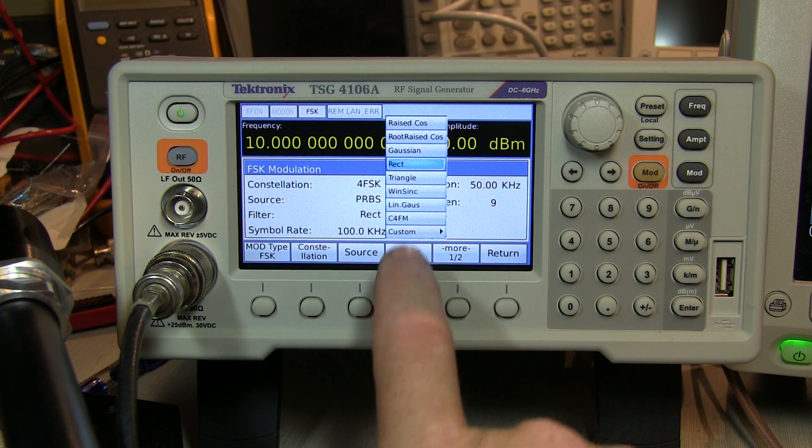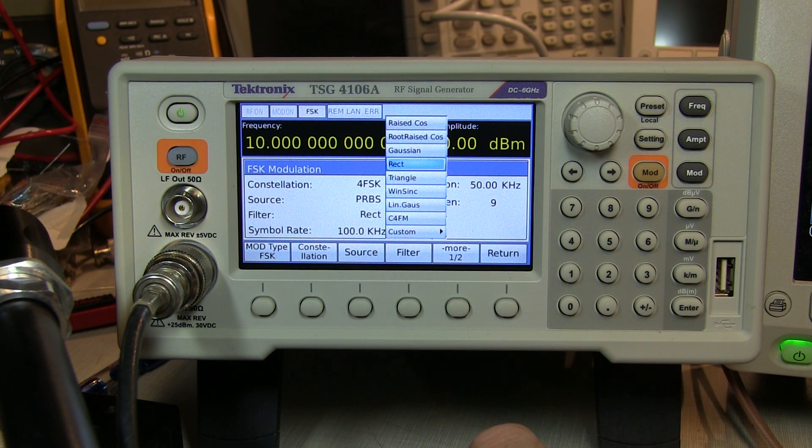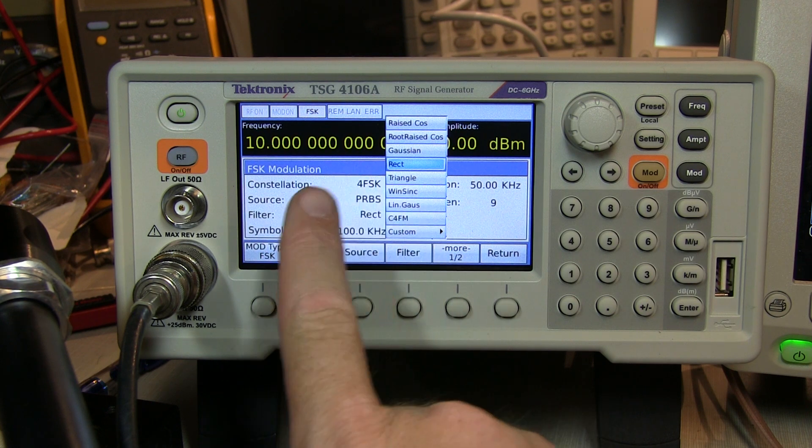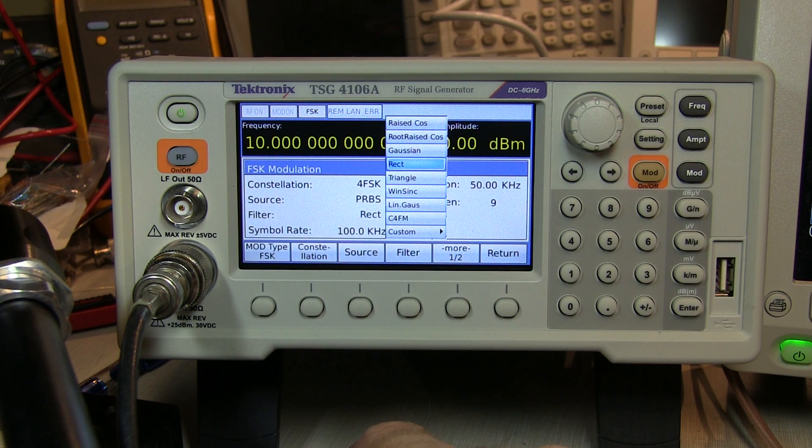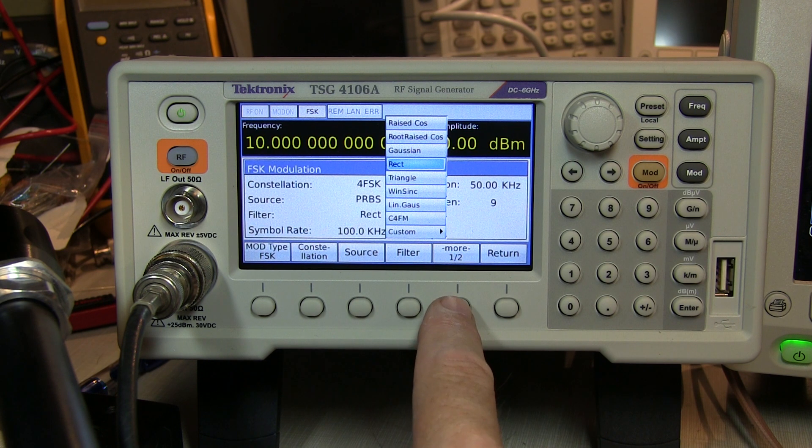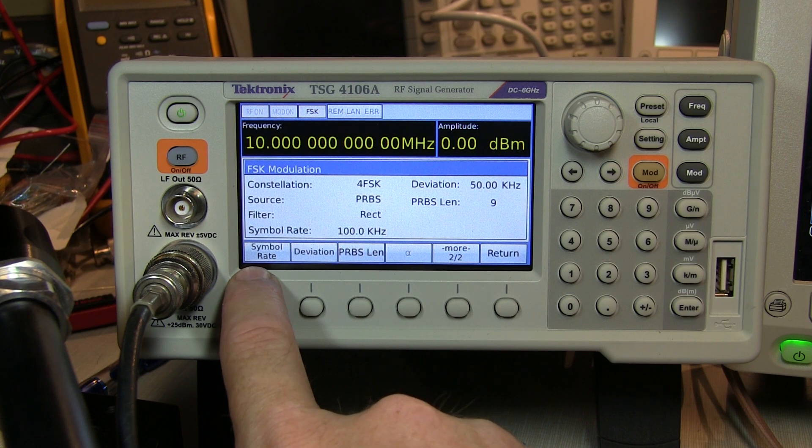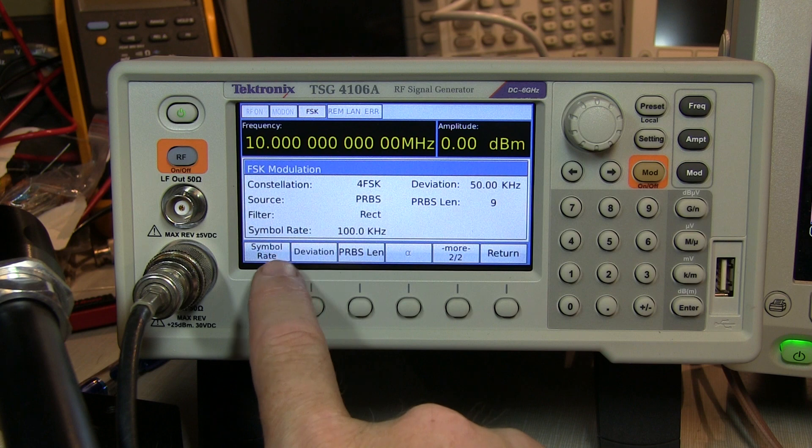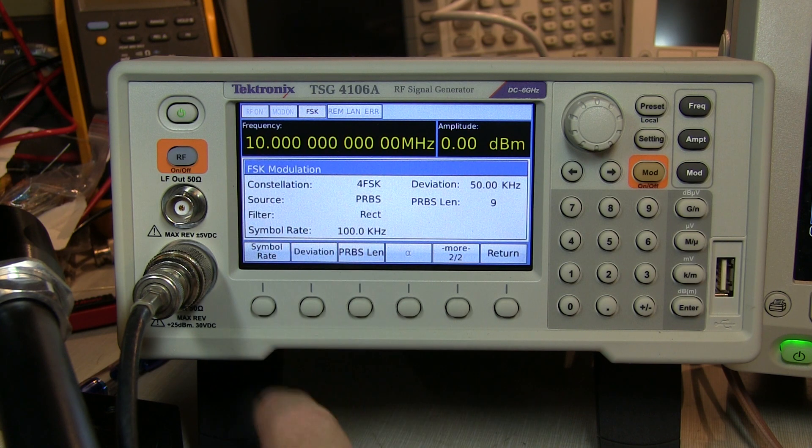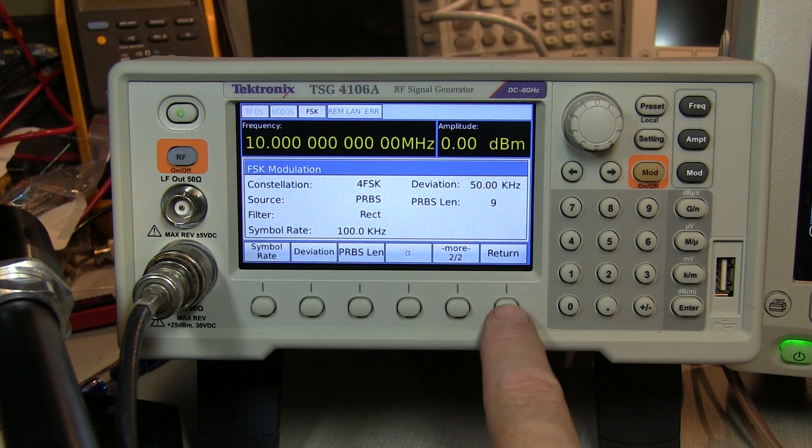And then you can select the filter type for the baseband signal, which will determine how quickly we're shifting from one of the frequency states to the next, which also affects the occupied bandwidth of the signal. And there's some more parameters on a second page to select the symbol rate of the digital data that is being used to modulate the data, or the RF, set the deviation, set the pseudorandom binary sequence length.